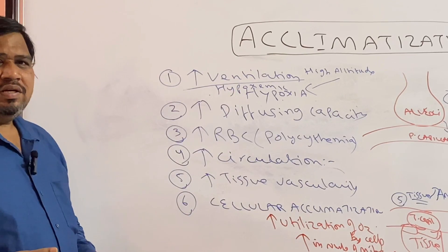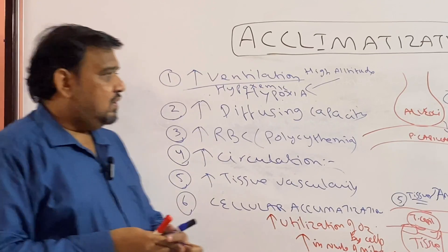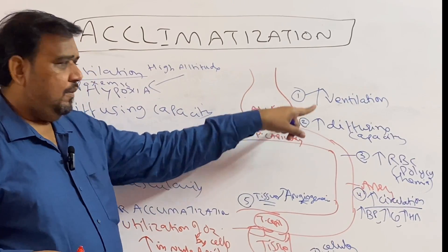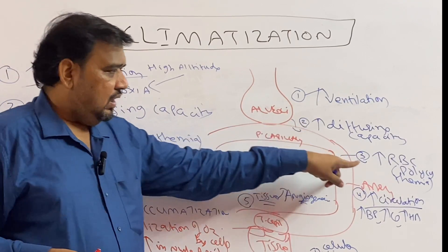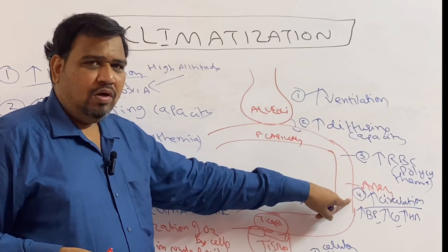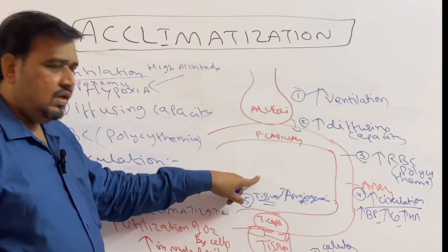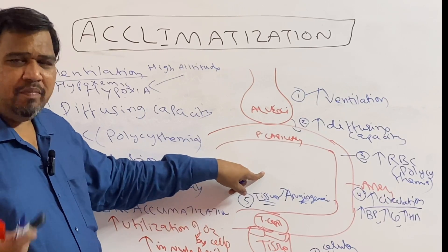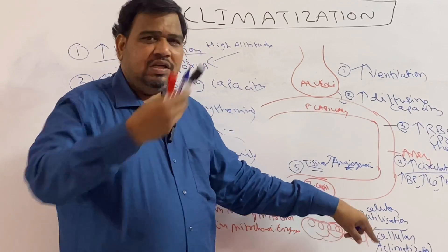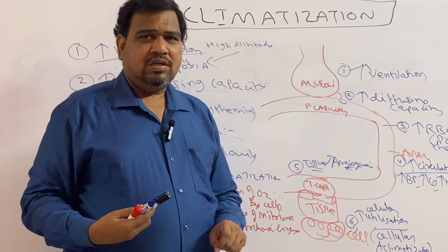To summarize, all six things that take place in acclimatization: increased ventilation, increased diffusion capacity, polycythemia — increased RBC production, increased supply system including increased cardiac output and blood pressure, at tissue level angiogenesis and formation of new blood vessels, and at cellular level increase in utilization of oxygen by the cells — cellular acclimatization.